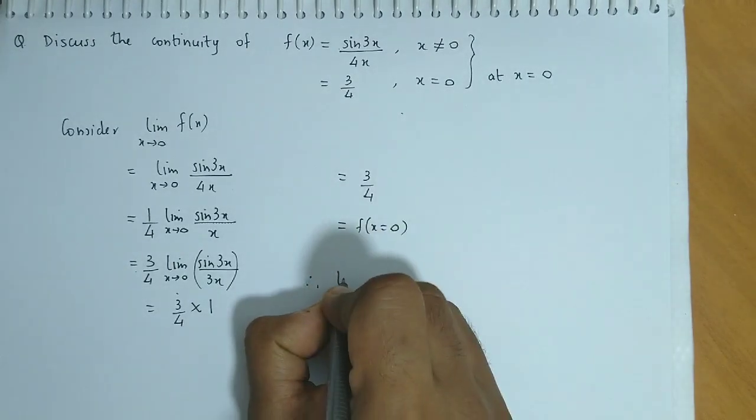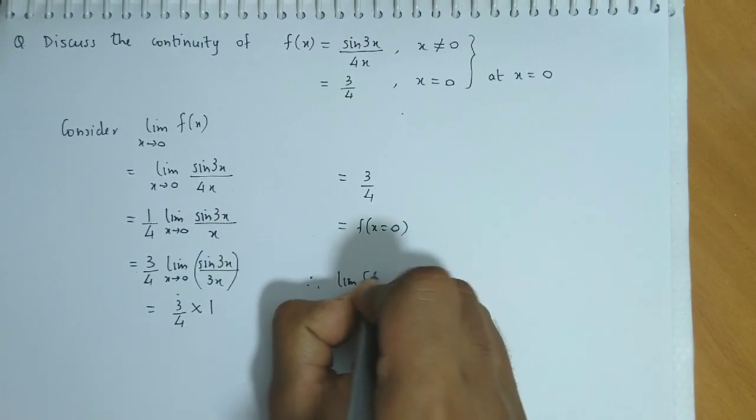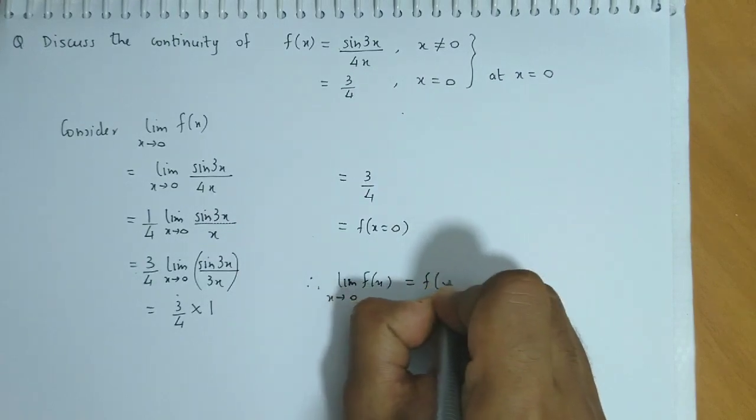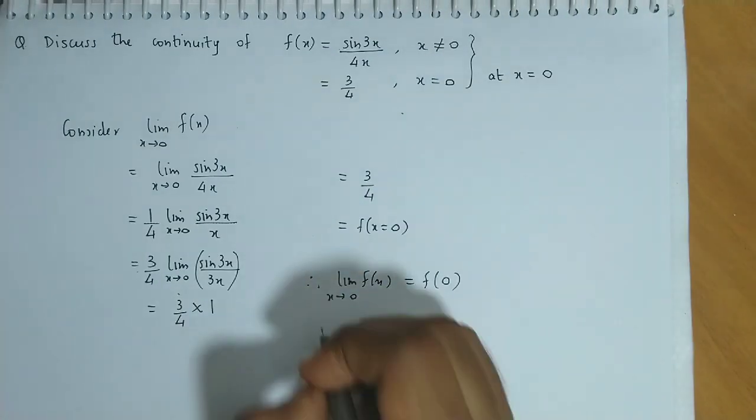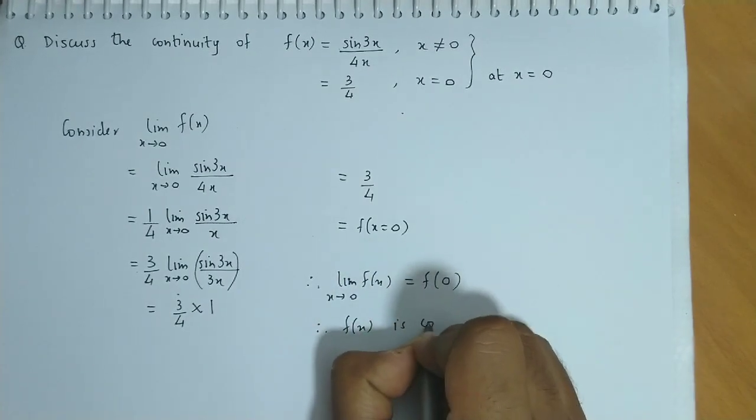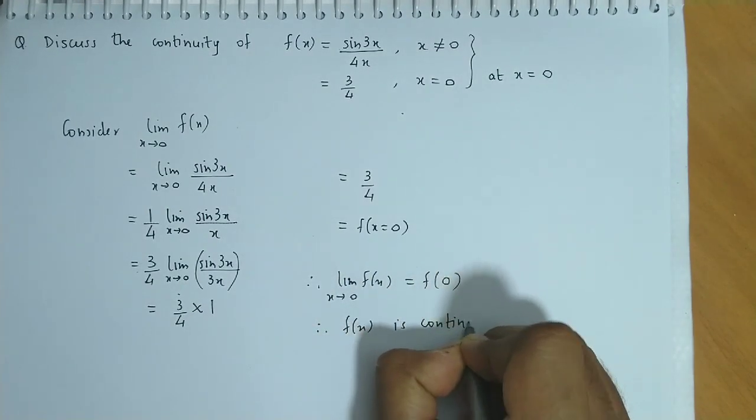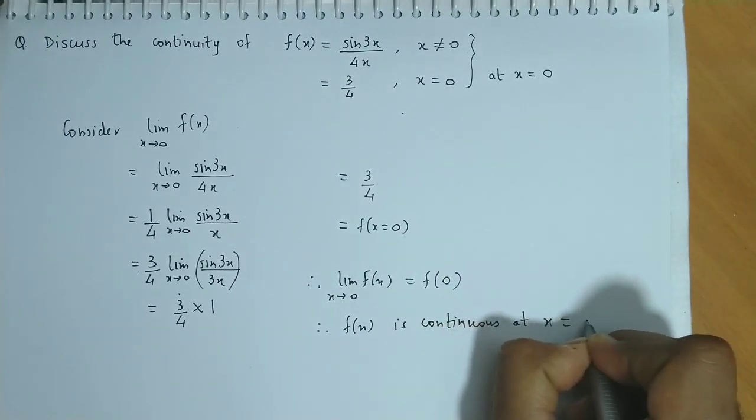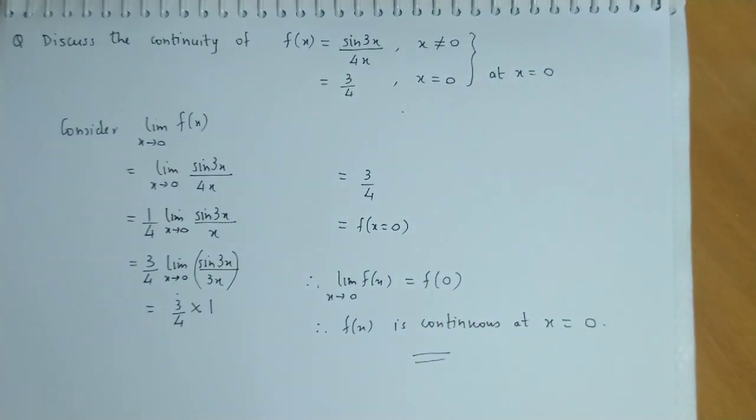So now we can write the conclusion: limit of f(x) as x approaches 0 is equal to f of 0. Therefore f(x) is continuous at x equal to 0.